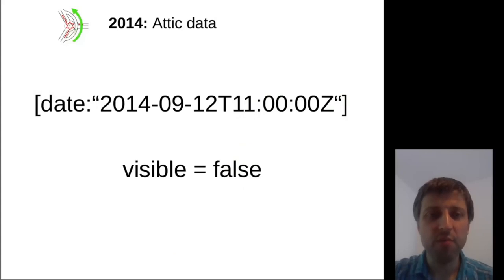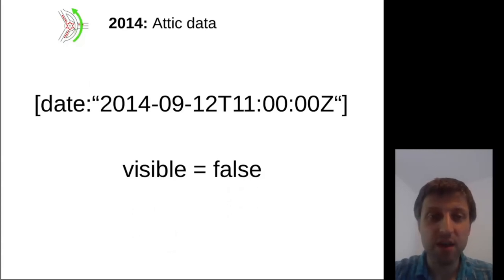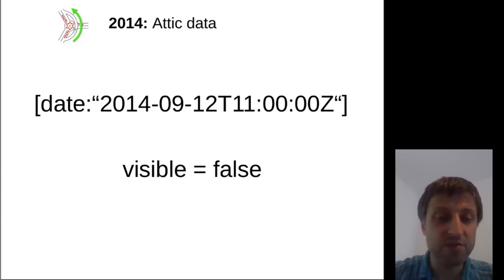2014 was also the year where the Overpass API started to offer attic data, or museum data — meaning you can get the data as it was at any time since 2012. The purpose of this feature is to either undo errors or ensure that references to OpenStreetMap data continue to make sense.